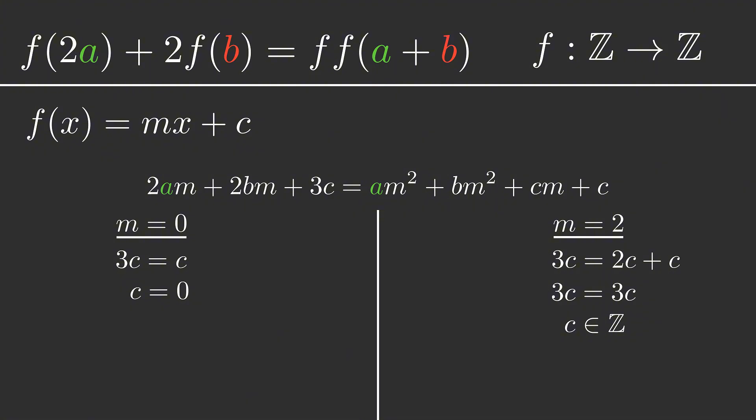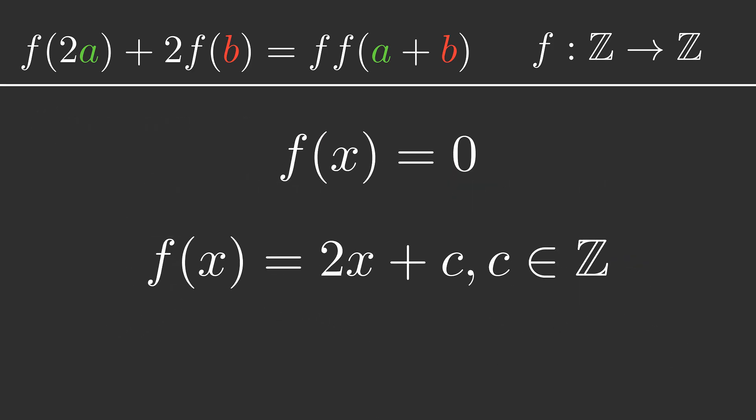So now we're able to write our two solutions. On the left, we get that f of x must be 0, i.e. the trivial solution. And on the right, we get that f of x equals 2x plus c, with c being any integer we like.